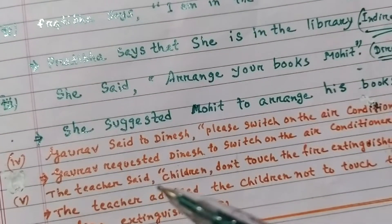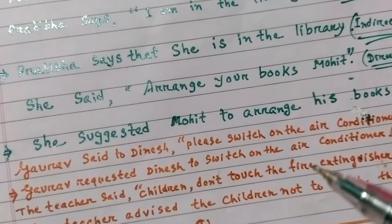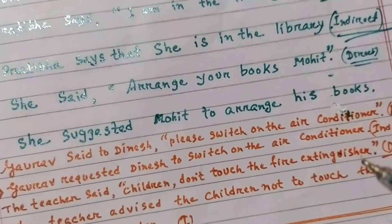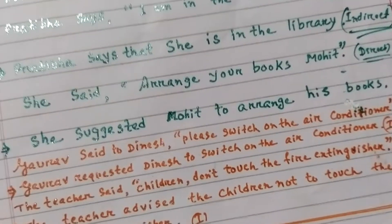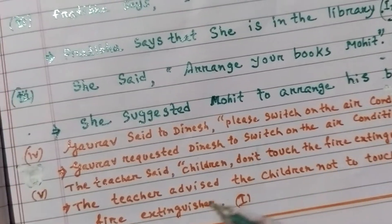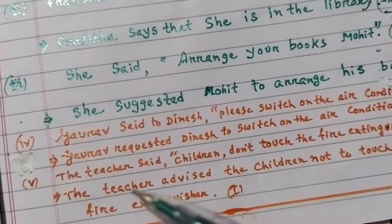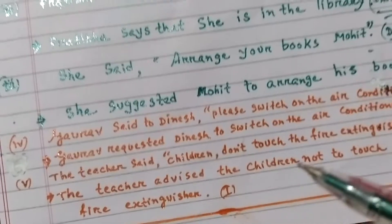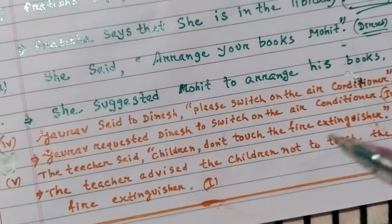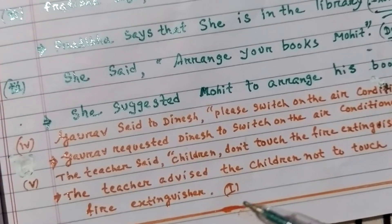Q2 Number 5: Direct speech — 'The teacher said, children don't touch the fire extinguisher.' In indirect speech: 'The teacher advised the children not to touch the fire extinguisher.'